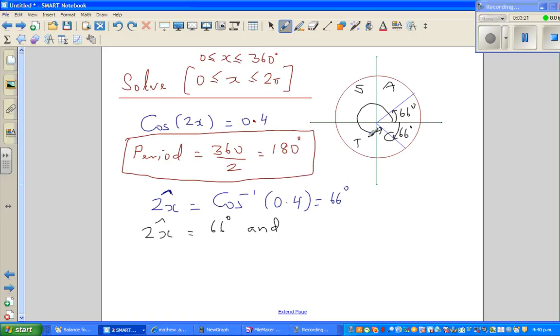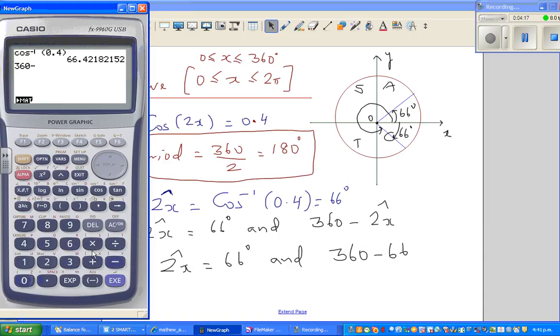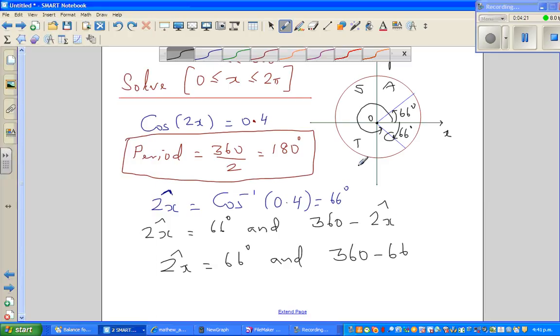By convention, we have to write this angle always with respect to the positive arm of the x-axis. This is the origin O, and this is the positive arm. Whenever you're referring to the angle, it's how many degrees it is with respect to the positive arm. So the other angle would be 360 minus 66 degrees, or 360 minus the reference angle. This is 360 minus 66, which is 294.